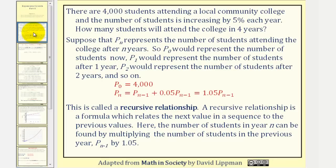Suppose there are 4,000 students attending a local community college, and the number of students is increasing by 5% each year. How many students will attend the college in four years?